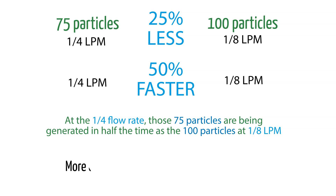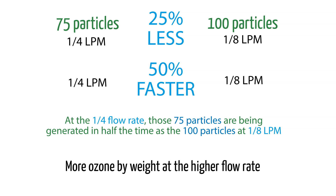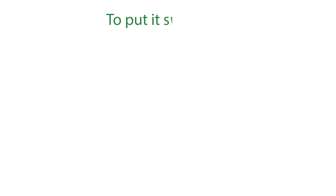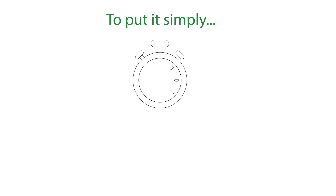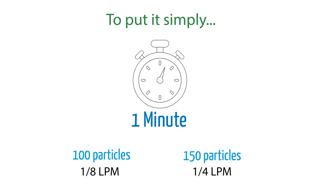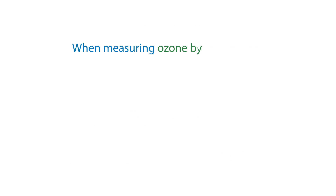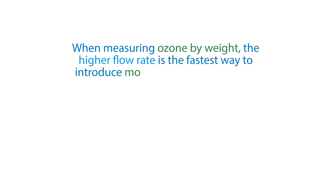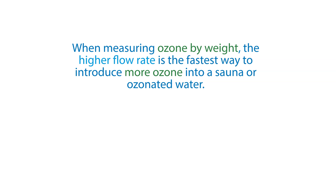So as you continue to run the ozone, you're getting more ozone by weight at the higher flow rate than at the lower rate. To put it simply, in one minute you get 100 particles at 1/8 liter per minute, but 150 at 1/4 liter per minute. When measuring ozone by weight, the higher flow rate is the fastest way to introduce more ozone into a sauna or ozonated water.